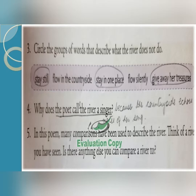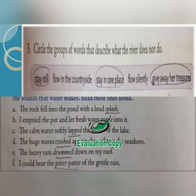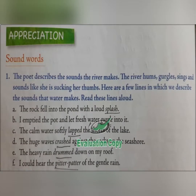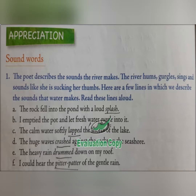So now we will move towards the appreciation of the poem. The poet describes the sounds the river makes — the river hums, gurgles, sings and sounds like she is sucking her thumbs. Like a child sucking the thumb, it's making that gurgling sound. We had done that when I was explaining the poem. So here are a few more lines in which we describe the sounds that water makes. You need to read these lines aloud. All these are sound words, children. In previous poems you have learned about personification, syllables, so many things. So today you are learning about sound words.